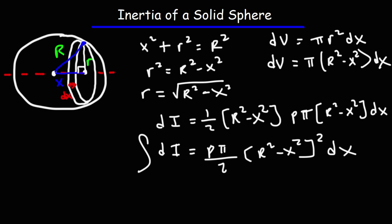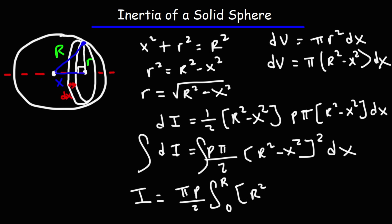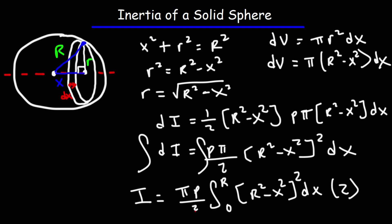Taking the integral of both sides, the inertia is going to be πρ/2 times the integral. We can integrate from −R to R, or integrate from 0 to R and multiply by 2. I'm going to integrate from 0 to R and multiply by 2, which makes the algebra a lot easier. So we're integrating the right half from 0 to R and doubling it to get everything.